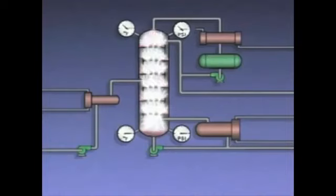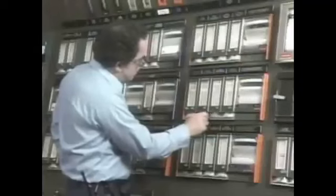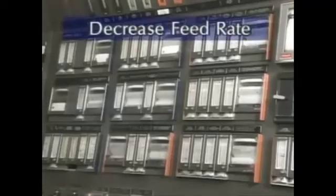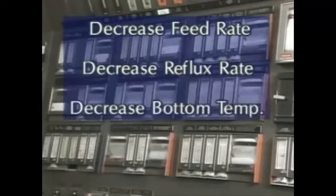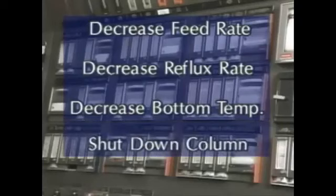Also, liquid that's forced out of the top of the column can cause a sudden rise in the level in the receiver. Some of the more common methods used to eliminate a flooding problem involve temporarily decreasing the feed rate, the reflux rate, or both to reduce the amount of liquid in the column, and decreasing the bottom temperature to reduce the flow rate of vapor up the column. In extreme cases, it may even be necessary to shut down the column so that the problem can be corrected.